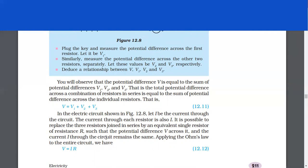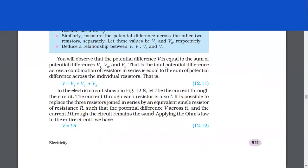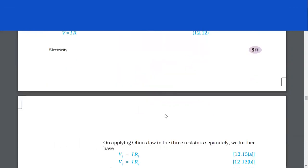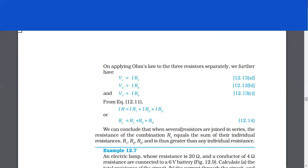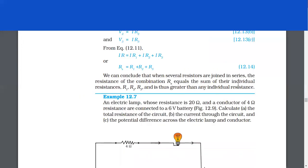In the electric circuit shown in figure 12.8, let I be the current through the circuit. The current through each resistor is also I. It is possible to replace the three resistors joined in series by an equivalent single resistor of resistance R such that the potential difference V across it and the current I through the circuit remains the same. Applying Ohm's law to the entire circuit: V = IR. Applying Ohm's law to the three resistors separately: V1 = IR1, V2 = IR2, and V3 = IR3. So IR = IR1 + IR2 + IR3, therefore Rs = R1 + R2 + R3. We can conclude that when several resistors are joined in series, the resistance of the combination Rs equals the sum of their individual resistances and is thus greater than any individual resistance.